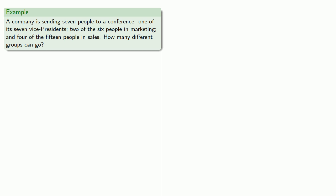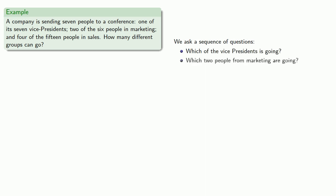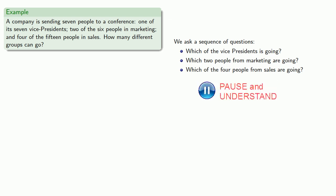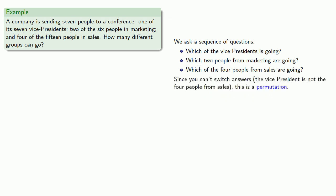We can think about this as asking a sequence of questions: which of the vice presidents is going, which two people from marketing are going, and which four people from sales are going. Since we can't switch answers — the vice president is not one of the four people from sales — this is actually a permutation.